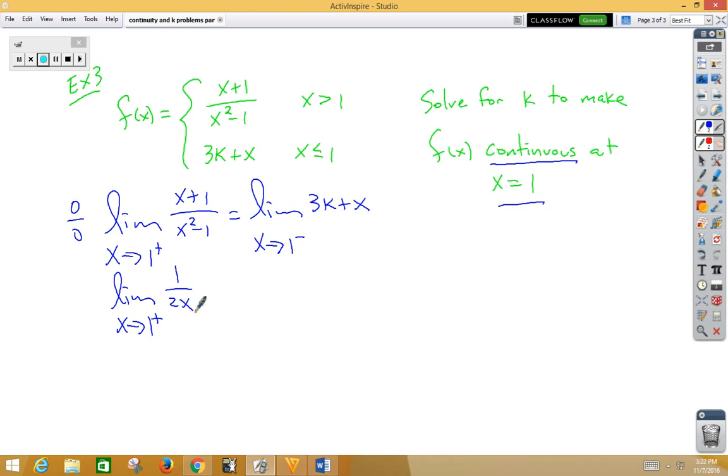We would get a 1 over 2x equal to... Now, over here when we plug in the 1, we would get 3k plus 1. Well, this limit on the left side of the equation is 1 half is equal to 3k plus 1.